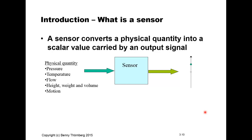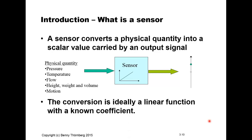Physical quantities that we can think of could be pressure, temperature, flow of gas or of liquids, height, weight, volume. We could also measure motion or acceleration. The conversion of a physical property to an electrical signal is ideally a linear function with a known coefficient and possibly also with a known bias.